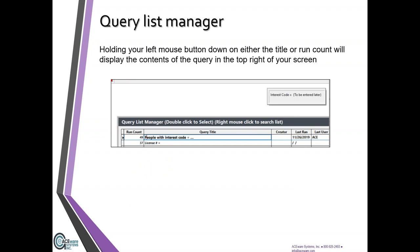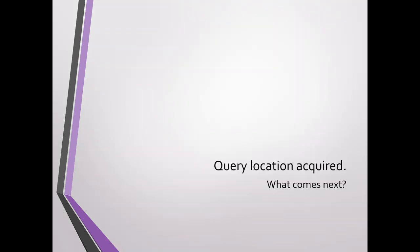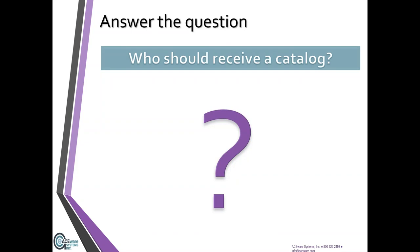When you're looking for a query and aren't sure what it does, if you just hold your left mouse button down on the title or the run count, you'll get the contents of the query displayed at the top right of your screen. You do have to keep holding the mouse button down to read it — as soon as you let go, that preview disappears. So location acquired — what comes next? Let's go back to our question: who should receive a catalog?